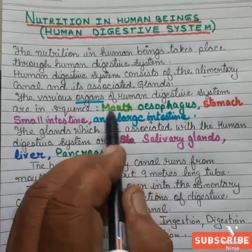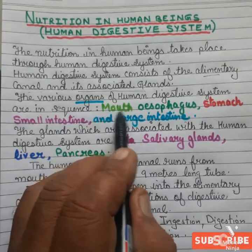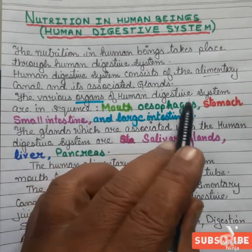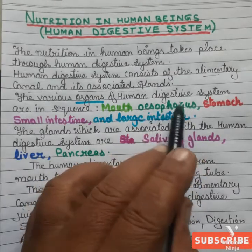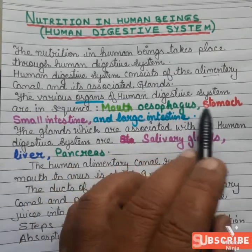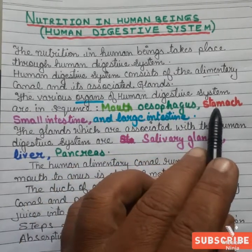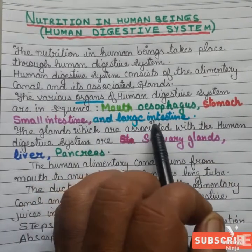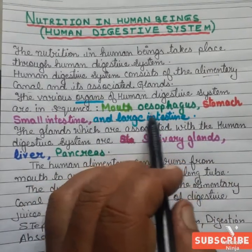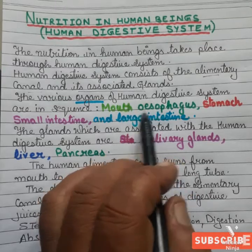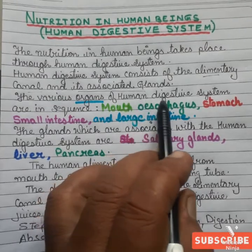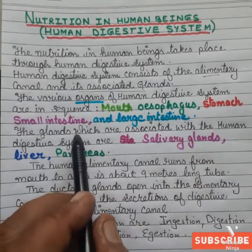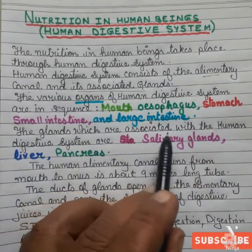Digestion starts with the mouth, then food goes into the food pipe (esophagus), from the esophagus into the stomach, then the small intestine, and then the large intestine. These are the organs associated with the human digestive system.